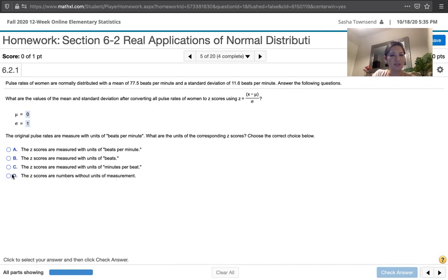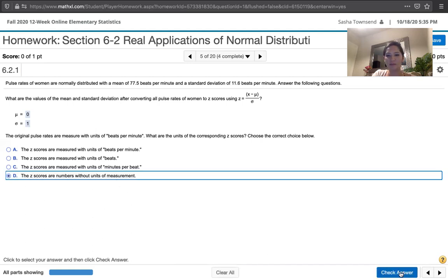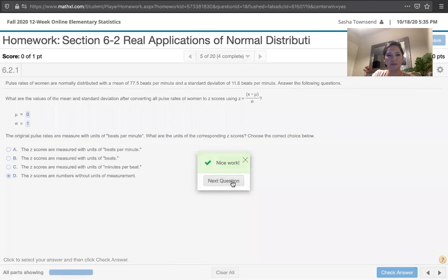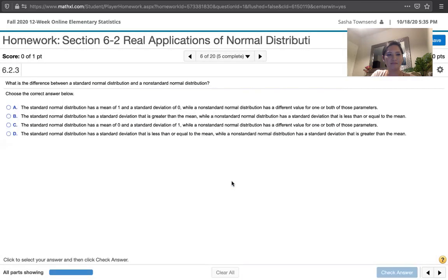z-scores are numbers without units of measurement. That's our answer. Okay. Oh, and that's it. That was the end of that question.